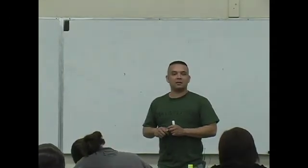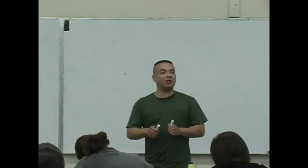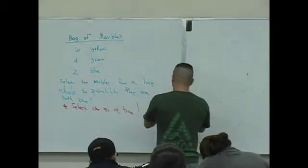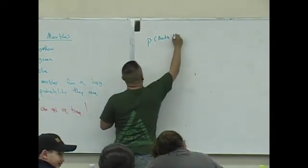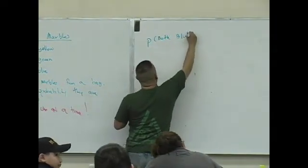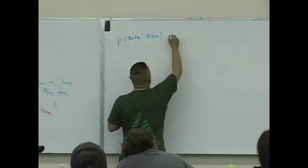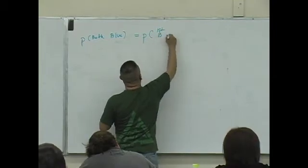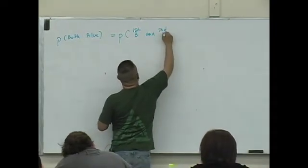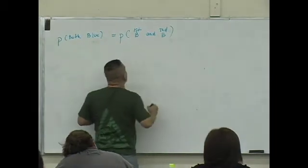One at a time. That's the key. So if we keep track of what we're doing, we consistently go about it this way, you practice this, it's not going to be so hard. So the probability that they are both blue. That means the probability the first is blue and the second is blue. Do you guys agree with that?